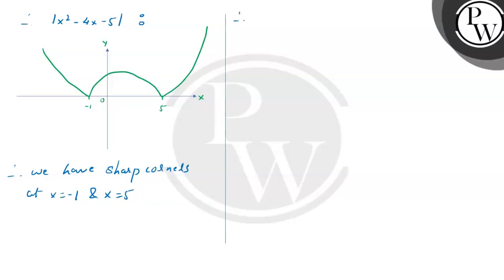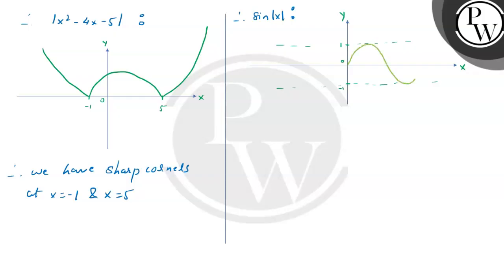Now let's draw the graph of sin|x|. Here we have the x-axis and y-axis, with y = 1 and y = -1 marked. The graph passes through points at π, 2π, -π, and -2π. As you can see, we have a sharp corner at x = 0.